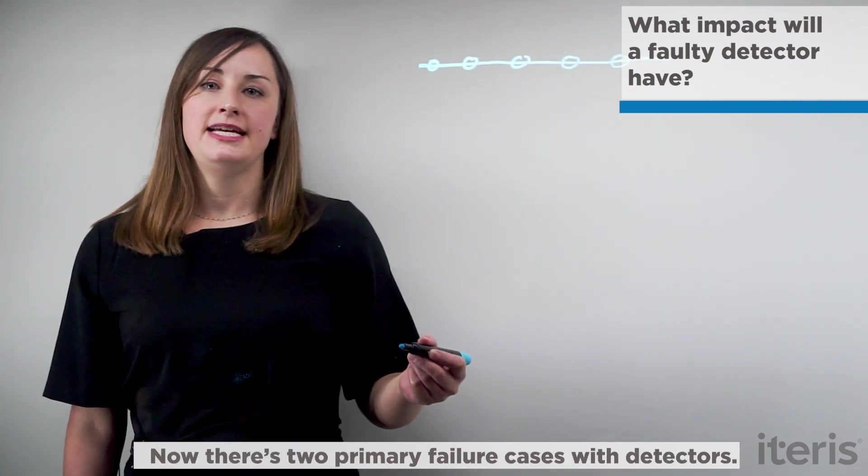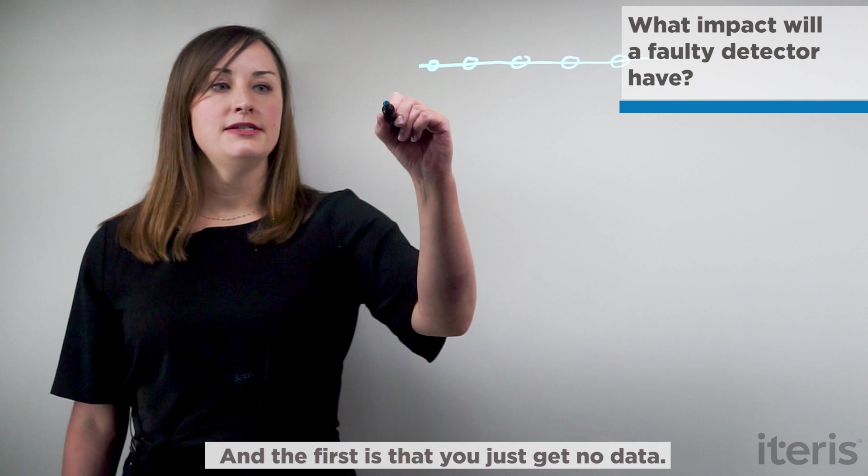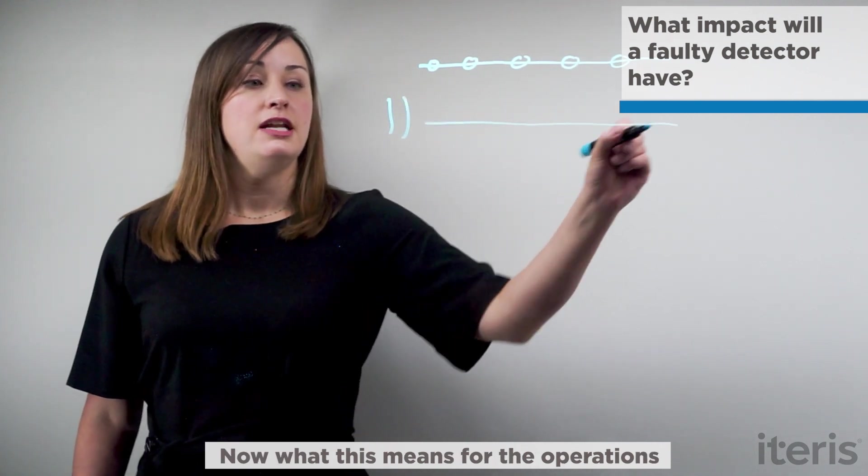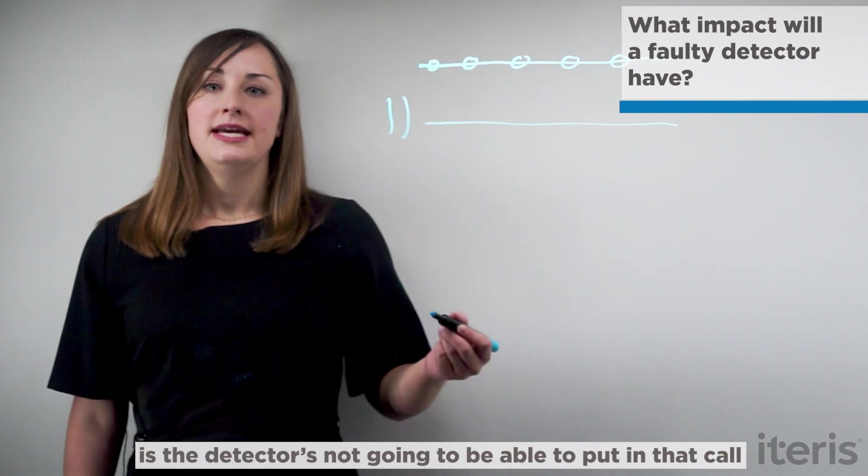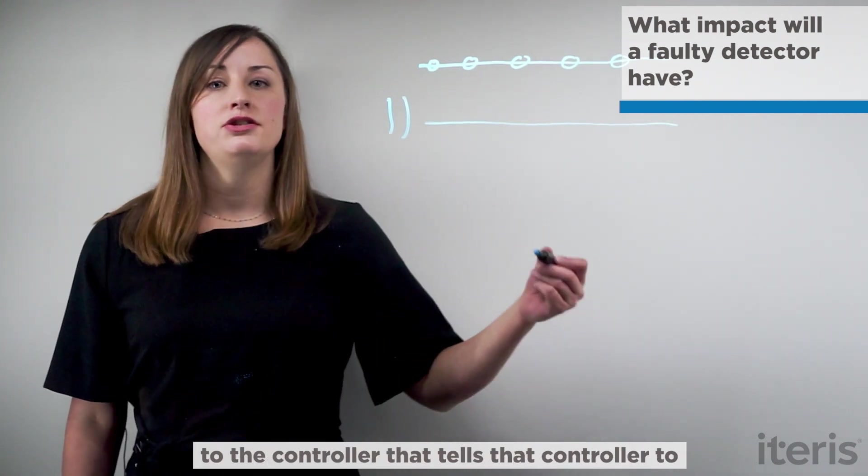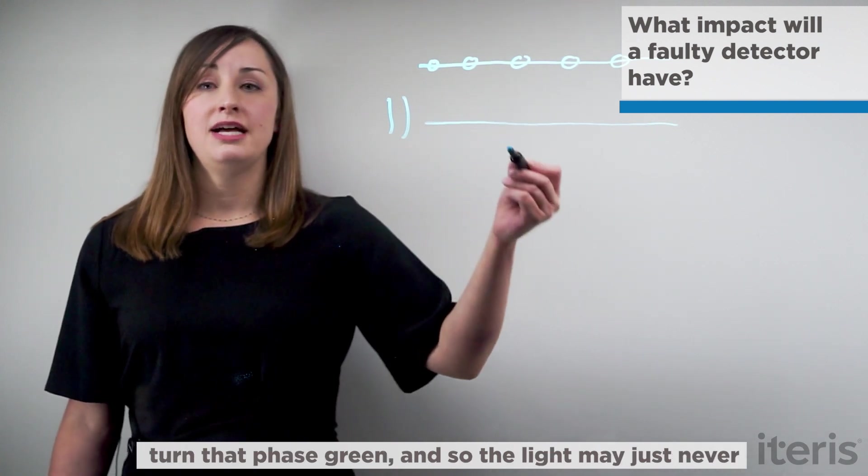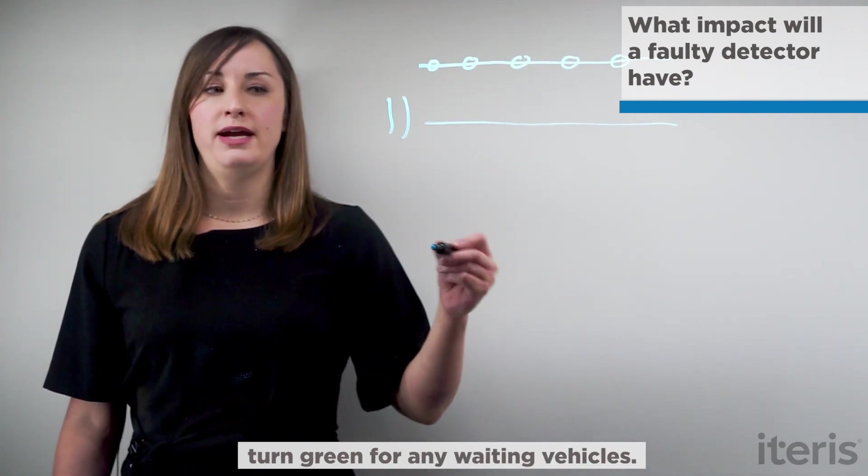Now there's two primary failure cases with detectors. The first is that you just get no data. What this means for the operations is the detector is not going to be able to put in that call to the controller that tells the controller to turn that phase green. And so the light may just never turn green for any waiting vehicles.